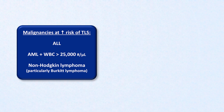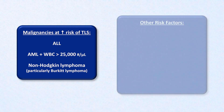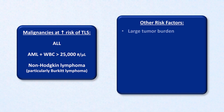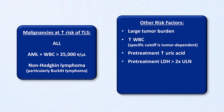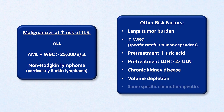In addition to the specific type of cancer, other risk factors include a large tumor burden, elevated white blood cell count, elevated uric acid before treatment even starts, an LDH two times above the upper limit of normal prior to treatment, chronic kidney disease, volume depletion, and a number of specific chemotherapeutics.